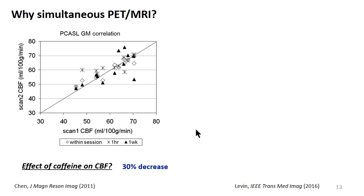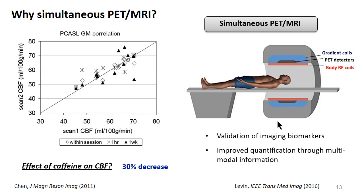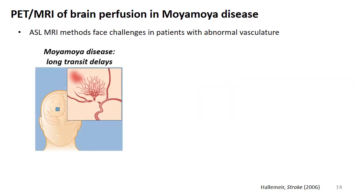One way to get around potential confounders is to take advantage of new hybrid technologies such as simultaneous PET-MRI, where the PET detectors are integrated into the bore of the magnet. This is a good opportunity to validate physiological markers that could vary between scan sessions and also improve quantification with multimodal information. I want to go through an example of what this might look like in patients with Moyamoya disease.